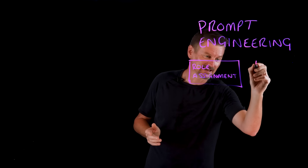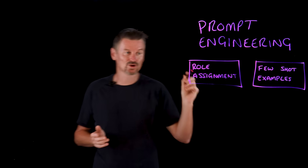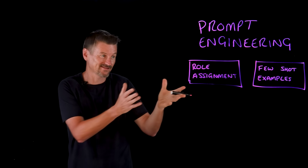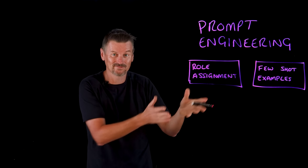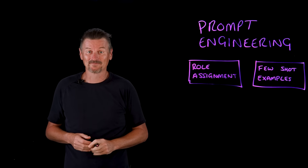Another good technique is few-shot examples — show, don't just tell. Providing two or three examples of input-output pairs helps the model understand your exact format and style requirements. So if you want JSON output with specific field names, show it in the examples.